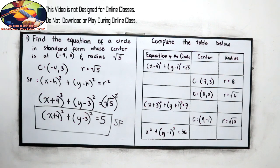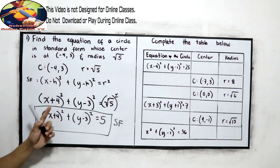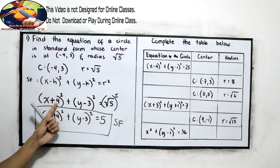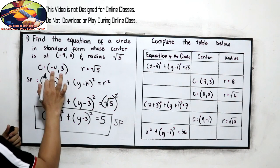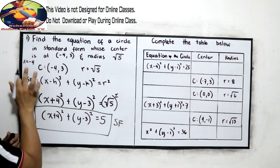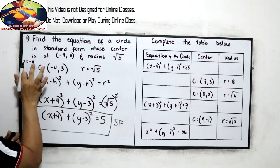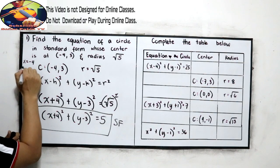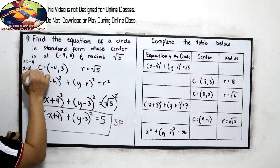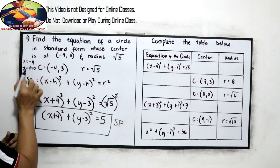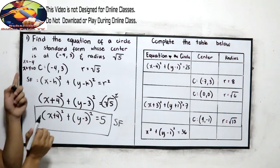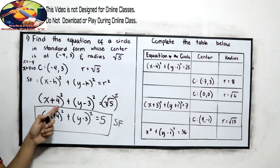Why did we change the sign? Negative 4 becomes positive 4 because if we solve step by step, x equals negative 4 — moving it to the left side gives x minus (negative 4) equals 0, which is x plus 4. That's why we have x plus 4.